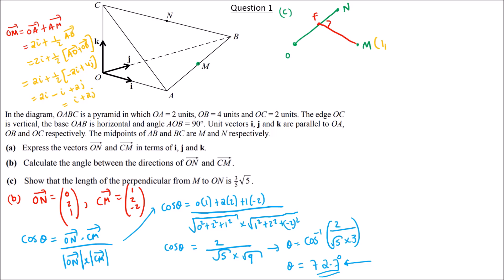Next, we write the vector equation of line ON. The equation is r = (0,0,0) + λ(0, 2, 1), where the direction vector is ON = (0, 2, 1). A general point F on the line has coordinates (0, 2λ, λ).